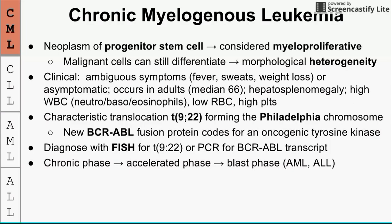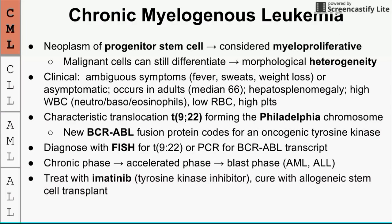CML progresses from a chronic phase to the blast phase. Most of the time it evolves into AML, but when it leads to ALL it carries a worse prognosis. The treatment is imatinib, a tyrosine kinase inhibitor, which targets the oncogenic BCR-ABL kinase and gives a very good prognosis. The only cure for CML is an allogeneic stem cell transplant, which carries risks of graft-versus-host disease and immune complications.